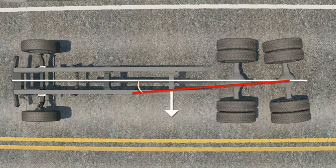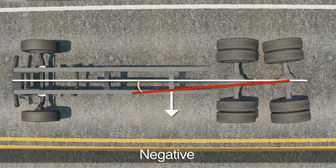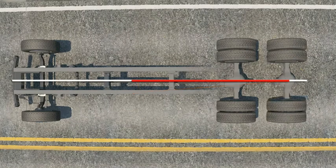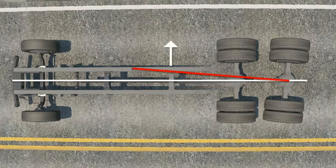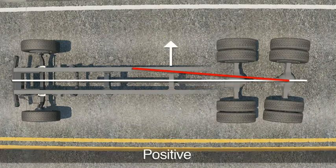If the axle is pointed to the left, the thrust line is considered negative. If the axle is pointed to the right, the thrust line is considered positive.